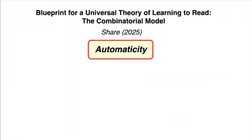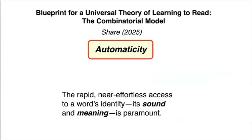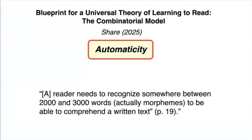Automaticity is central to anything language-related. As Cher's article on the combinatorial nature of language shows, the hard limit of cognitive processing for oral and written language means that the rapid, near-effortless access to a word's identity — its sound and meaning — is paramount. Regarding written language, he cites evidence from many languages suggesting that a reader needs to recognize somewhere between 2,000 and 3,000 words — actually morphemes — to be able to comprehend a written text. Note the centrality of morphology for comprehension here.